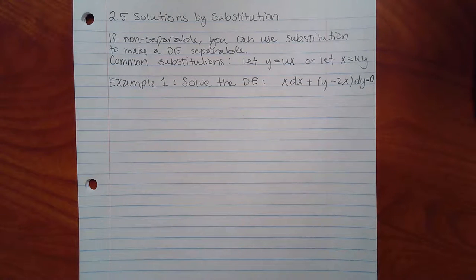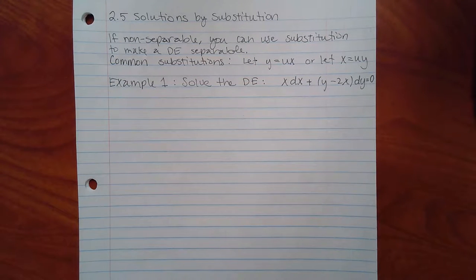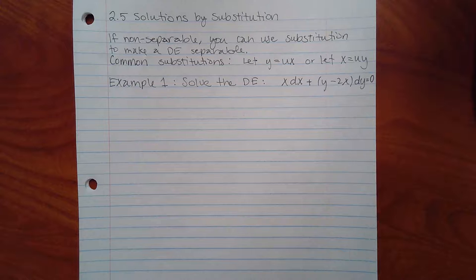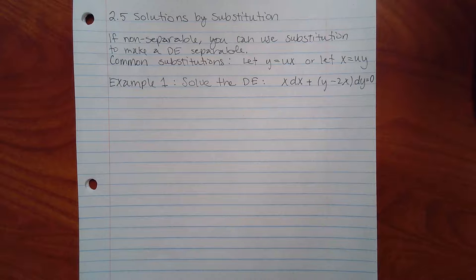Section 2.5 is solutions by substitution. If the problem is non-separable — and it either is or isn't — you would solve it using the separable method if it is separable. But if it isn't, this is a method you can use. So if you're seeing one on the homework or on the review, which I will post in Canvas, and if it asks whether it's separable and you say yes, then you should not be doing it by substitution, because it's not necessary.